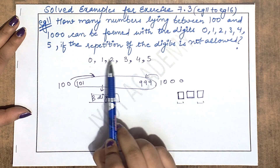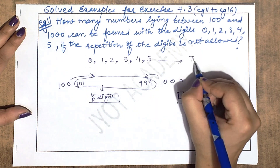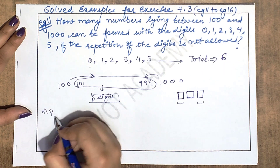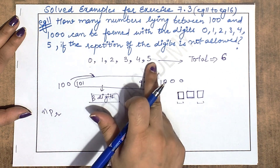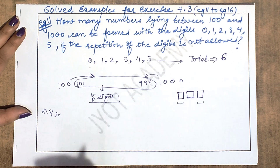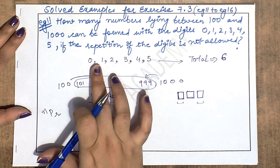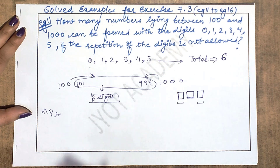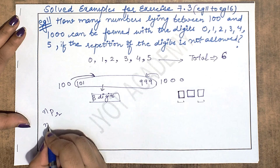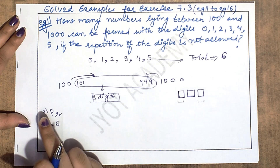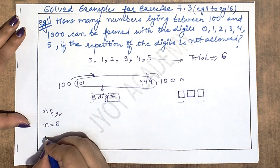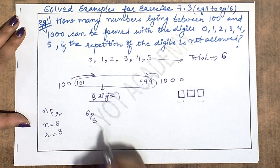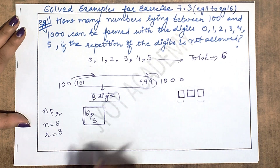Aapke paas total 6 digits hain: 0, 1, 2, 3, 4, 5. Permutation ka formula n P r hota hai, jismein n total given digits hote hain aur r kitne aap ek time create karte hain. Yahan mujhe 3 digit ka number banana hai out of 6 digits, toh n = 6 aur r = 3, so 6P3 likhenge.